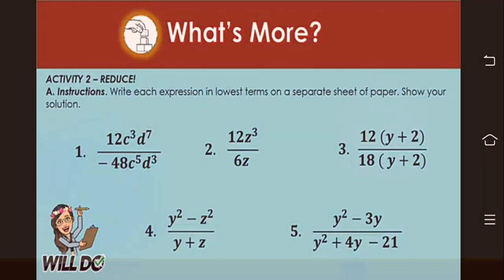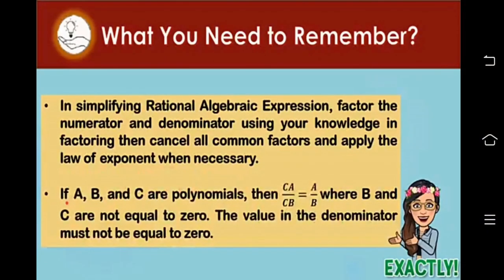I hope that helps. Here are what you need to remember. In simplifying rational algebraic expressions, factor the numerator and denominator using your knowledge in factoring. Then factor out all common factors and apply the laws of exponents if necessary. If a, b, and c are polynomials, then ca over cb is equal to a over b, because you can factor out c as the common monomial factor, where b and c are not equal to 0. Because if b and c are equal to 0, your fraction will have a 0 denominator and become undefined. The value in the denominator must not be equal to 0.